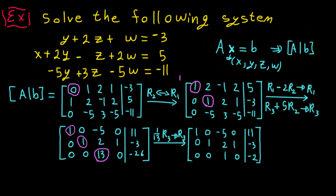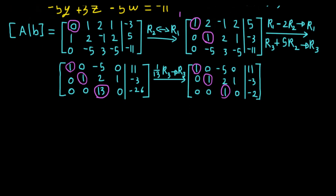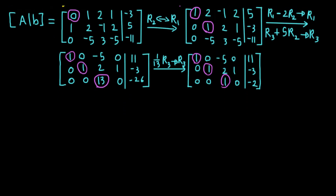After dividing by 13: row 3 becomes [0, 0, 1, 0 | -26/13] = [0, 0, 1, 0 | -2]. Now we have leading 1s here, here, and here. We need to make the last entry a leading 1 as well, and eliminate the other entries in column 3.